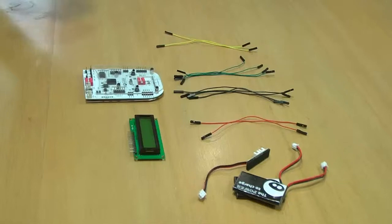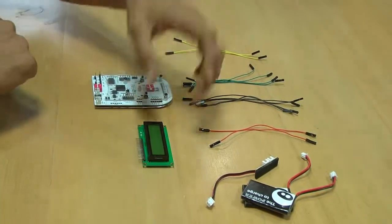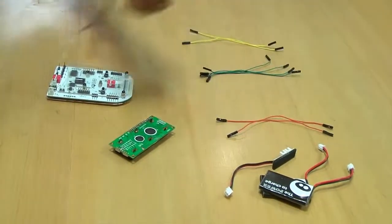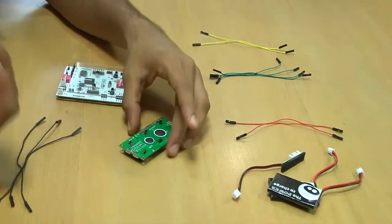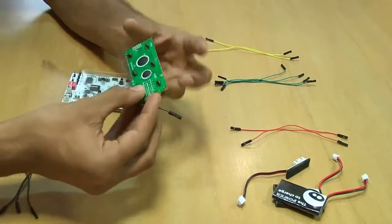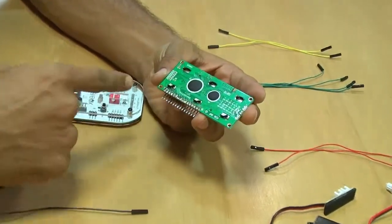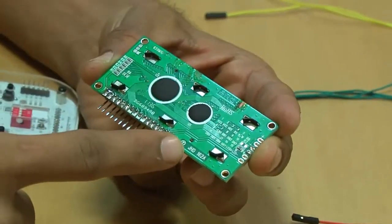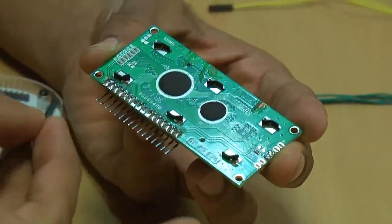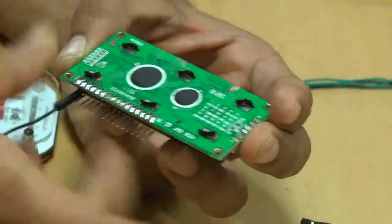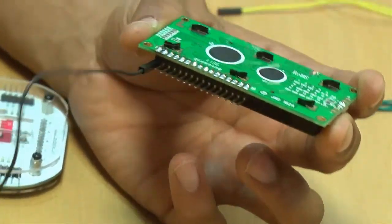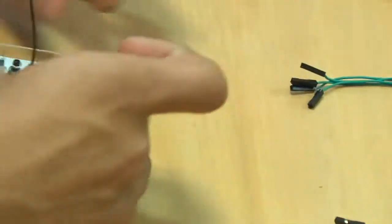For the connections, we start off by connecting the LCD and B-Box. I take single pin patch cord. Now as you see at the back side of the LCD, there are pins numbered as 1 to 16. So I start off from pin number 1. Pin number 1 is the ground pin. So I connect single pin patch cord to pin number 1 and the other end goes to minus of B-Box.